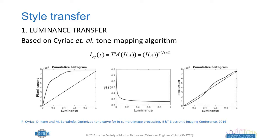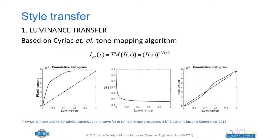For the luminance transfer, we use a tone mapping algorithm. Our original image is a raw image — the information the camera is capturing — which has a wider dynamic range than the displays where it will be shown. That information needs to be fit to the display using a tone mapping algorithm. We use a CDIAC tone mapping algorithm, which has two main characteristics: it works like human visual perception and it performs a constrained histogram equalization.